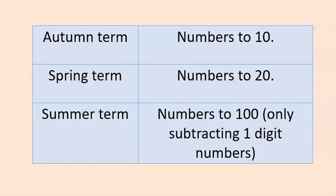It's worth noting that in the autumn term we focus on subtracting with numbers to 10, in the spring term we move on to numbers to 20, and then in the summer term numbers to 100, but our focus is really only on subtracting one digit numbers from the two digit numbers here.